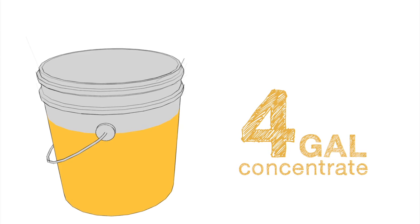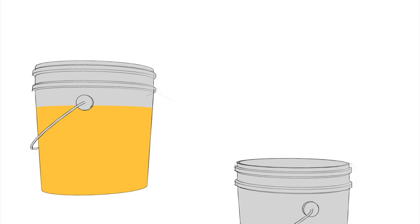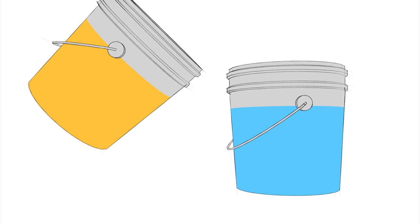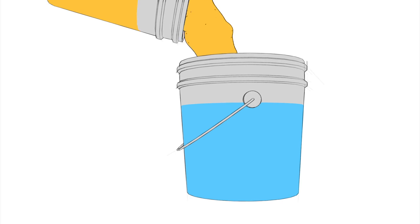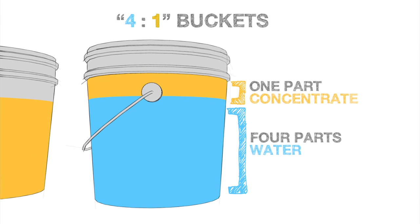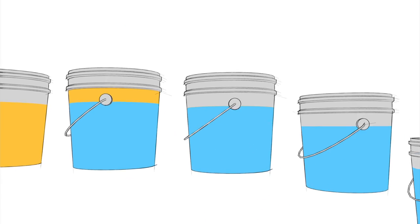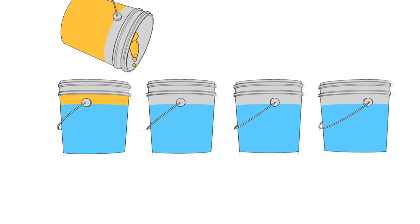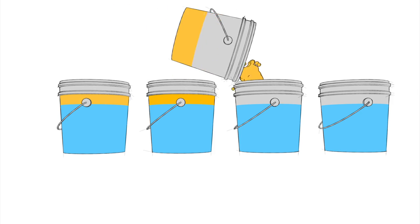We need to mix these 4 gallons of concentrate with water before adding them to the tank. When mixing concentrate with water, we always use a 4 to 1 water to concentrate ratio. Remember, we have 4 gallons of concentrate. This means we need to mix 4 total buckets using this ratio.